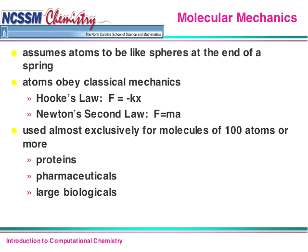I'm going to give you a quick snapshot of each of the four methods. Let's talk about molecular mechanics — the empirical modeling from the first box on the left — which assumes atoms to be like spheres at the end of a spring. Imagine the nucleus of a molecule connected as if by a spring: you pull those nuclei far apart, let them go, and they vibrate back and forth until they run out of energy and stop vibrating.